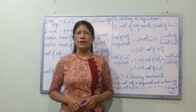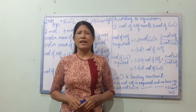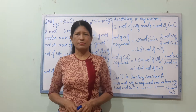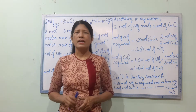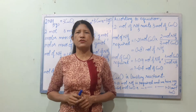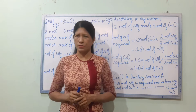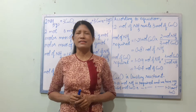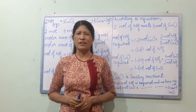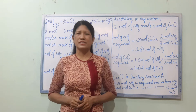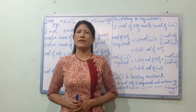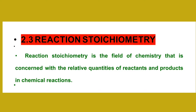Hello everyone. The topic of 2.3 is Reaction Stoichiometry — the area of chemistry that is concerned with the relative quantities of reactants and products in chemical reactions.